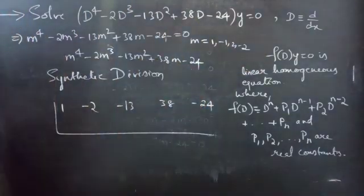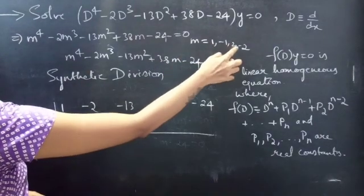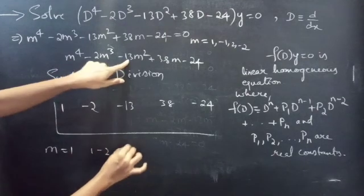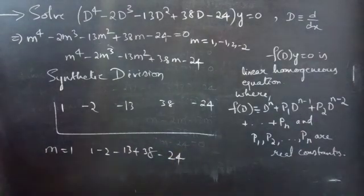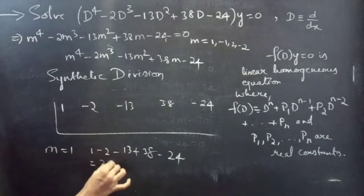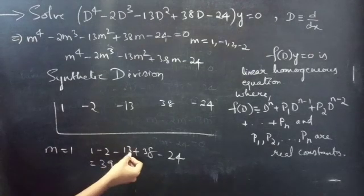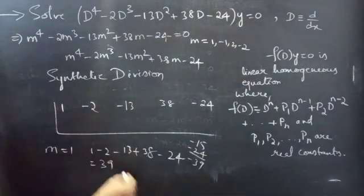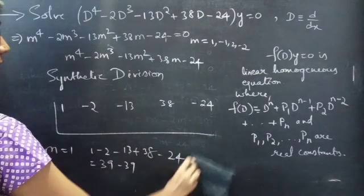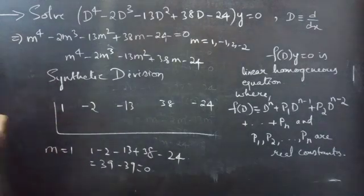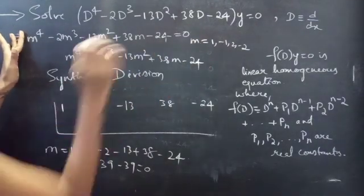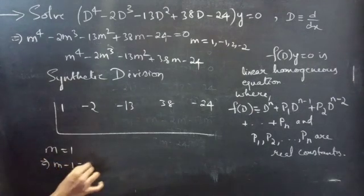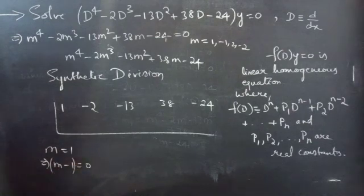We check when the polynomial becomes 0 by trying m = 1, -1, 2, -2, etc. When m = 1, we get 1 - 2 - 13 + 38 - 24. That gives 1 + 38 = 39, and -2 - 13 - 24 = -39. So 39 - 39 = 0, meaning m = 1 satisfies the equation, so m - 1 equals 0 and m - 1 is a factor.